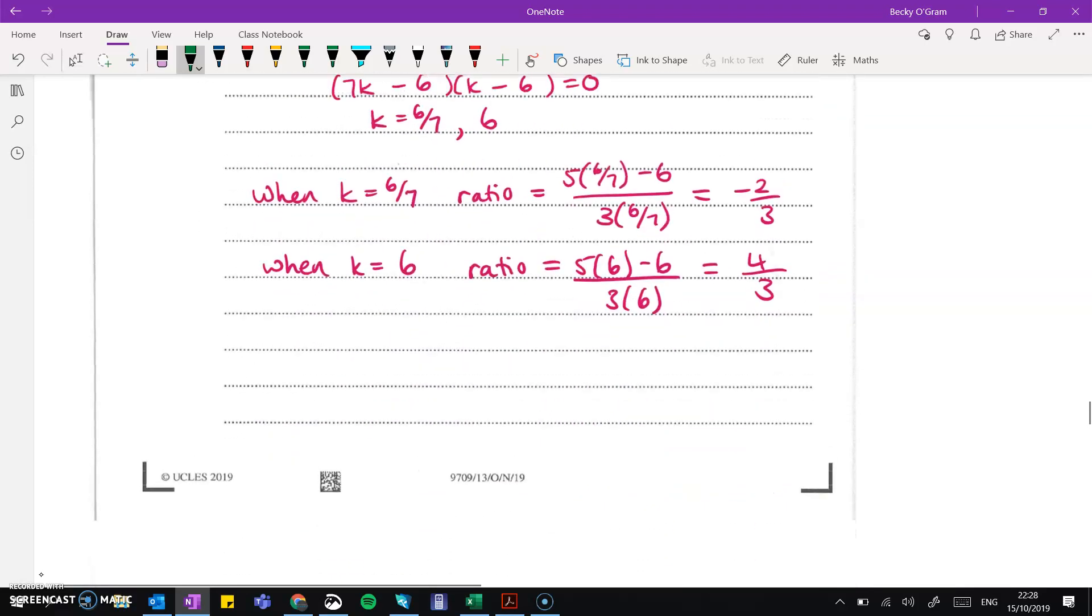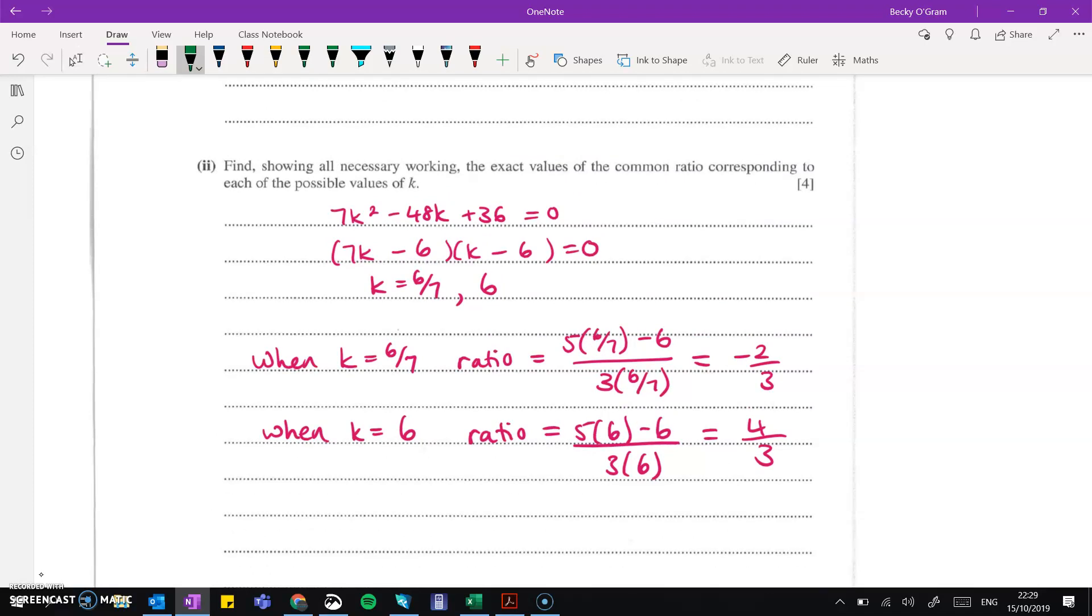So we can put that ratio into what we had in the top here. When k is 6 over 7, the ratio is minus 2 thirds. When k is 6, the ratio is 4 thirds.